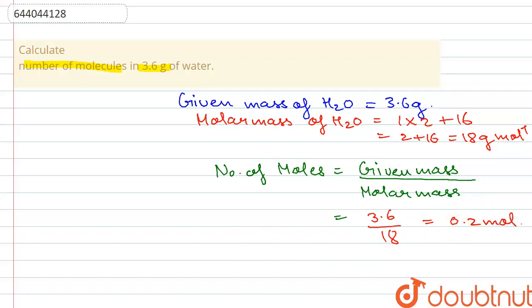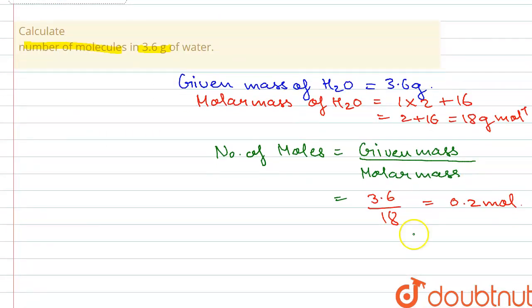Now we know the number of moles present in 3.6 grams of water. We have to now calculate the number of molecules. According to the mole concept, one mole of any substance consists of